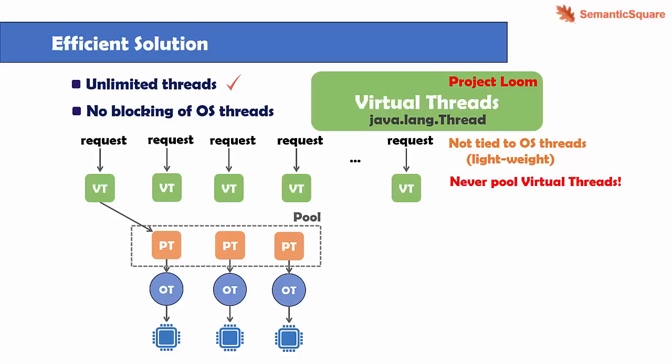If you compare this with a fixed thread pool, there we typically have a large number of platform threads — maybe in the order of hundreds, like 100 or 500, depending on our need. So here the pool size is small. The virtual thread is going to use a platform thread, and this assignment of a platform thread to a virtual thread is done by a JVM scheduler. So we now have a JVM scheduler that schedules virtual threads onto platform threads, while OS threads are still scheduled using the OS scheduler. When a virtual thread is scheduled to use a platform thread, we refer to this process as mounting a virtual thread onto a platform thread, and the platform thread is referred to as a carrier thread.